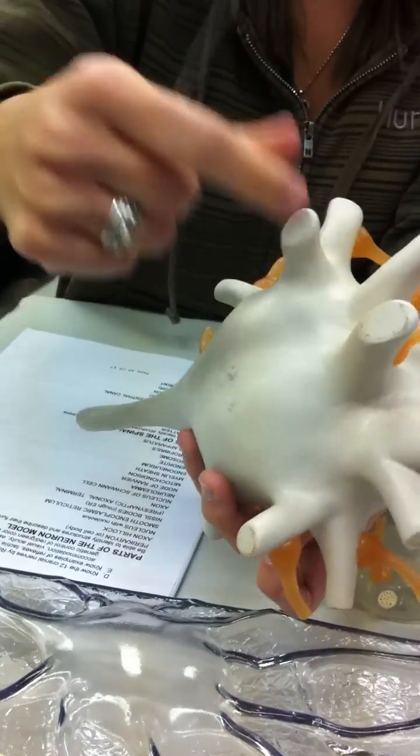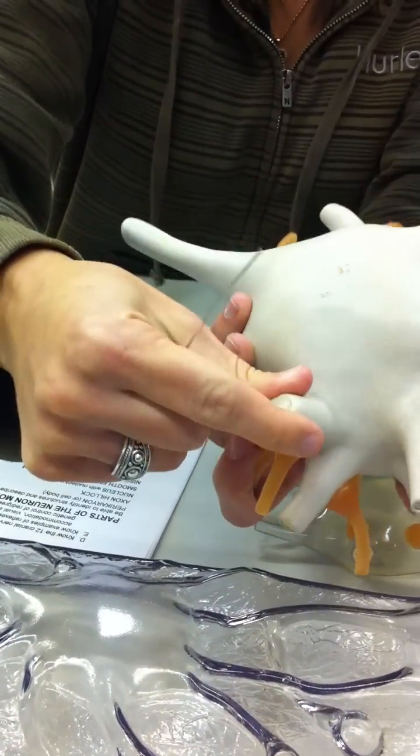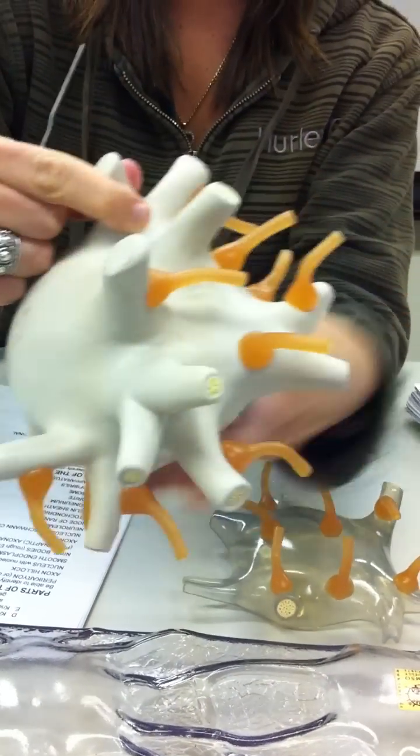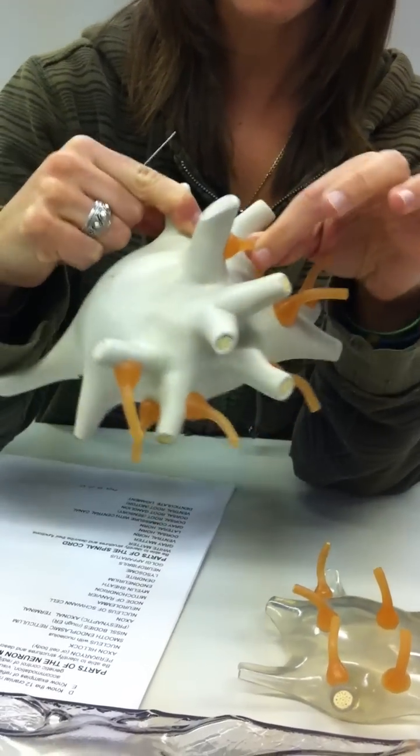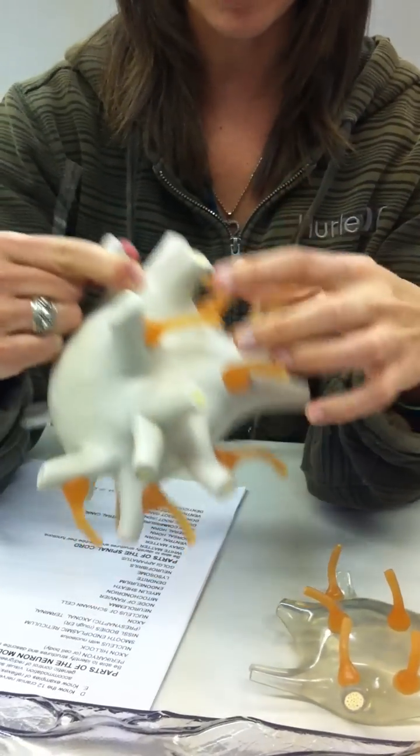Dendrites are these projections that come off the cell bodies. So remember, these are the dendrites. These are axon terminals of other neurons. They are not part of this neuron. They are just sending signals to this neuron.